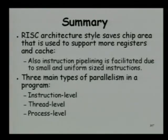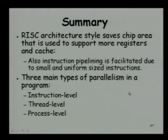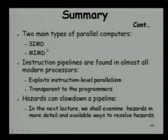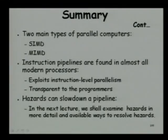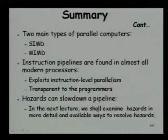To summarize, we saw that RISC architecture style saves chip area that is used to support more registers and cache, giving higher performance, and the other key mechanism is instruction pipelining. We saw three main types of parallelism: instruction level, thread level, and process level. Two main types of parallel computers: SIMD and MIMD, which we are going to discuss. Instruction pipelines are found in almost all modern processors, exploit instruction-level parallelism, and are transparent to programmers. Hazards are possibly the biggest problem for pipeline efficiency, and in the next lecture we shall examine hazards in more detail and see how to resolve them.